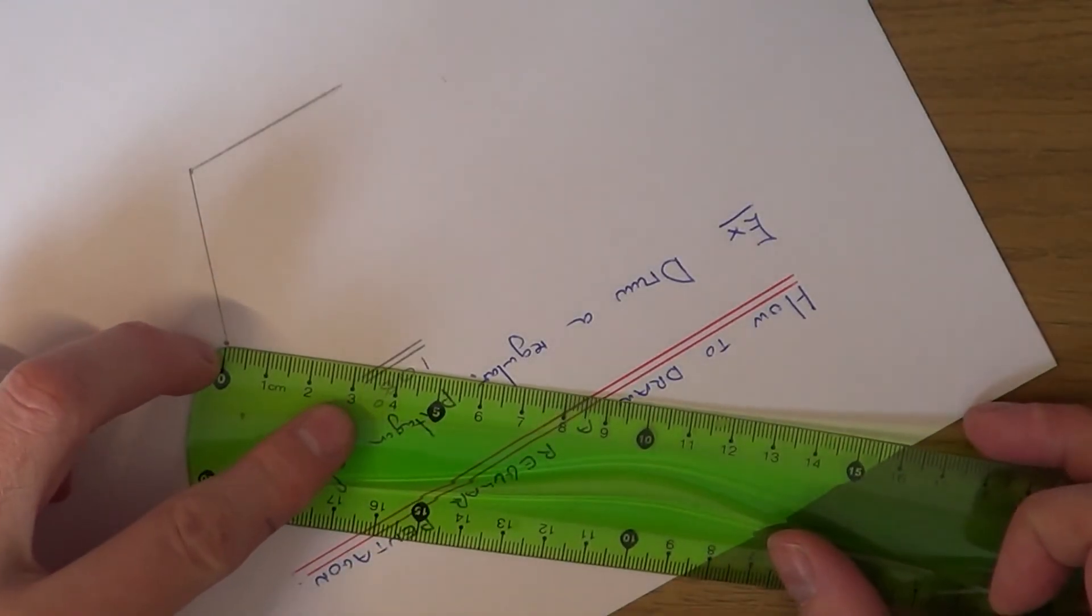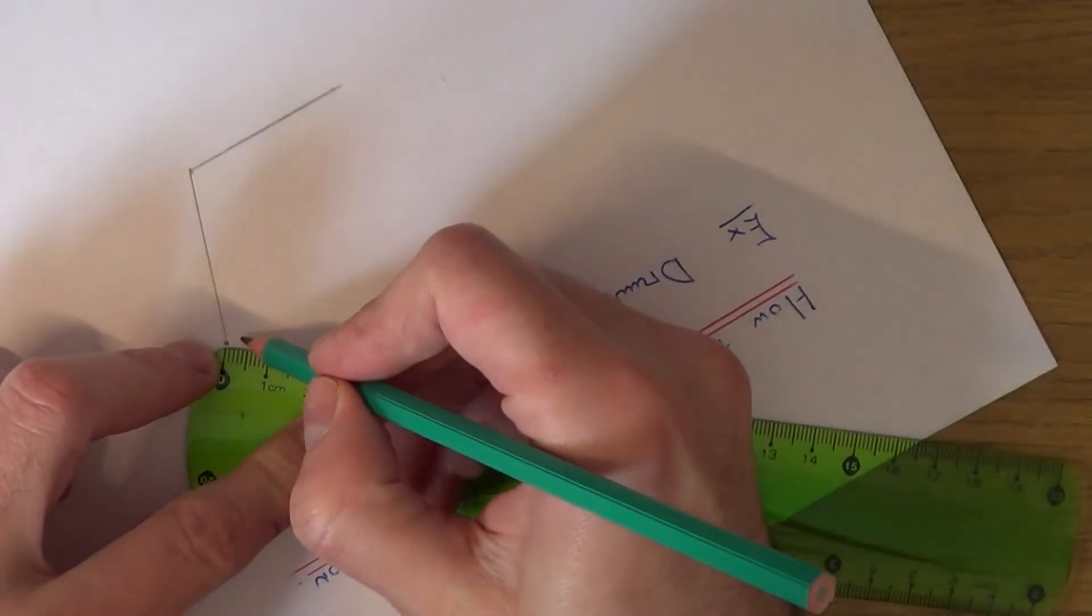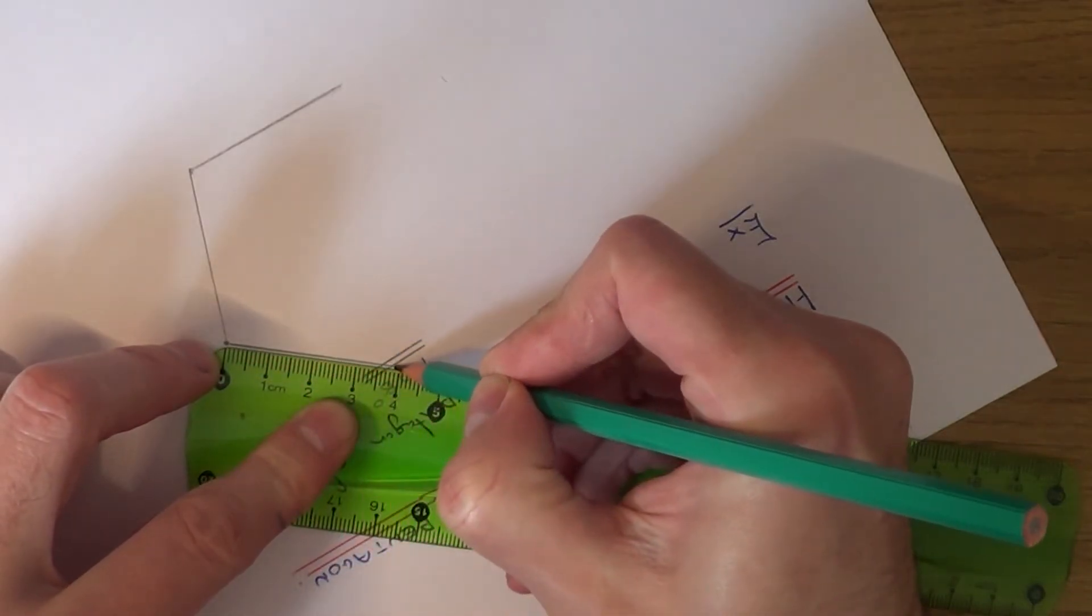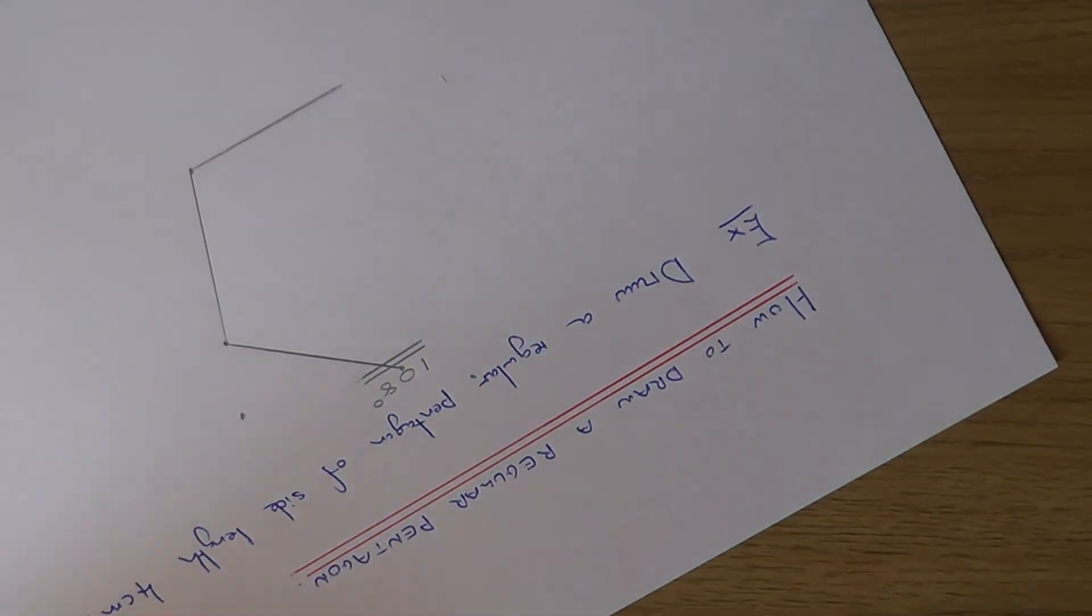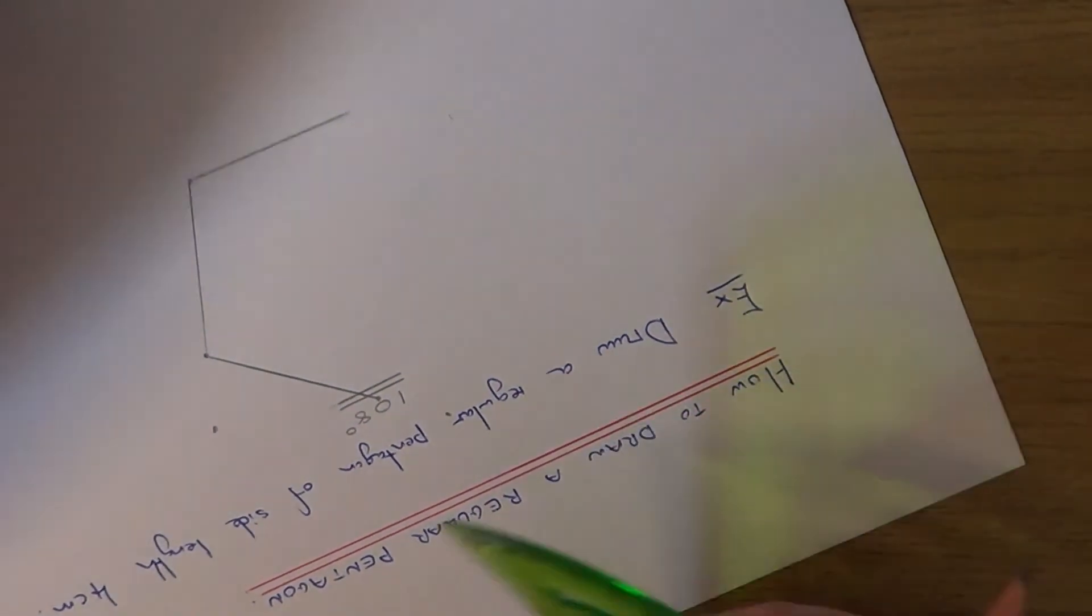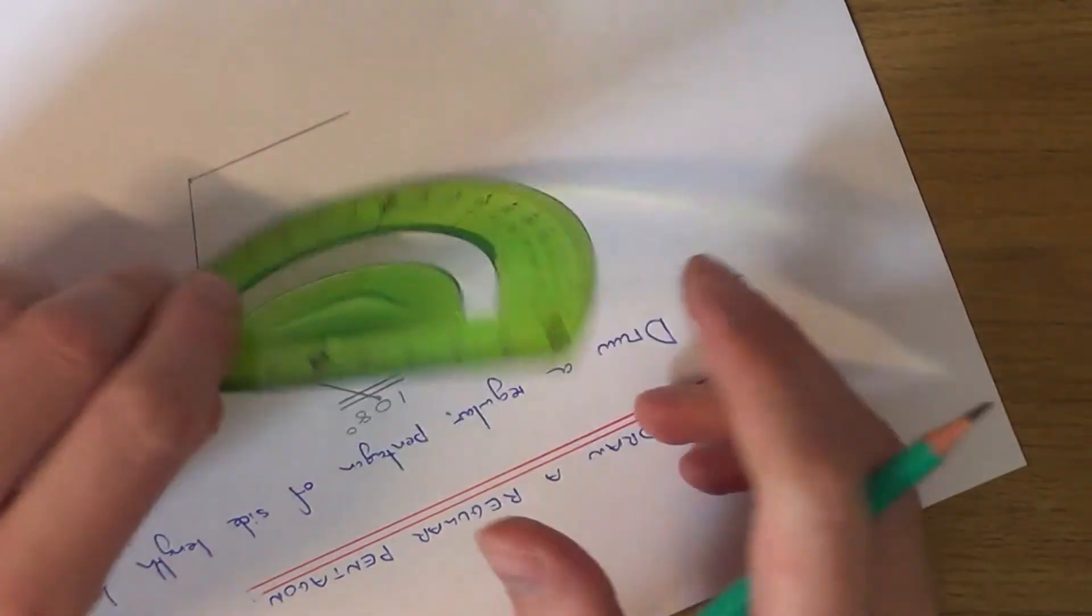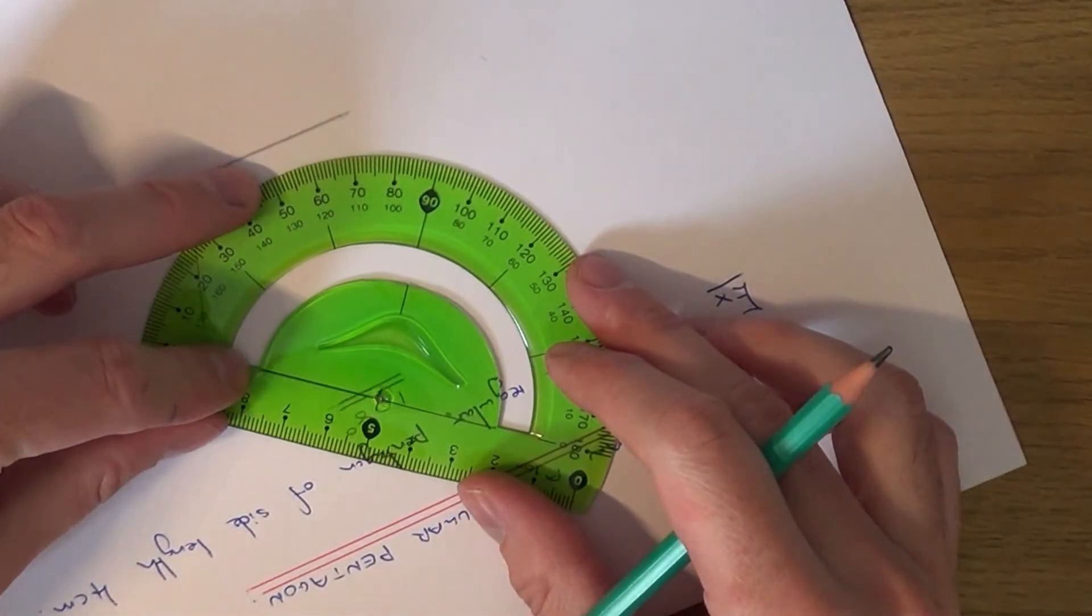So if you get it in line. So if we now measure our next angle from the end of this line, so again it's got to be 180 degrees.